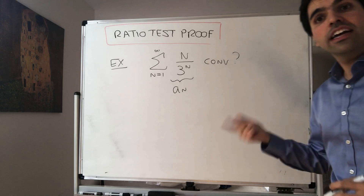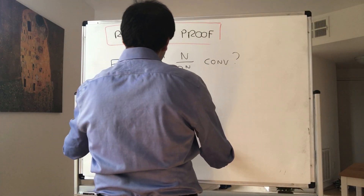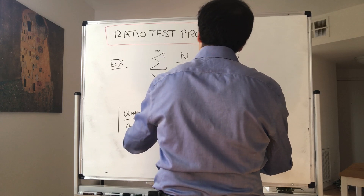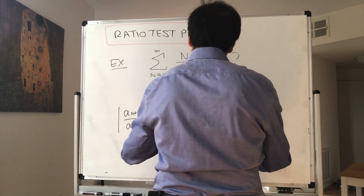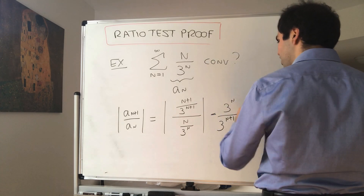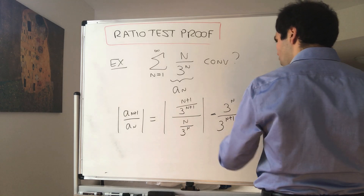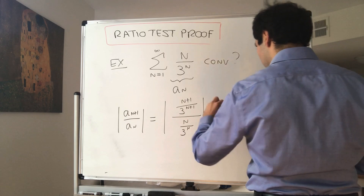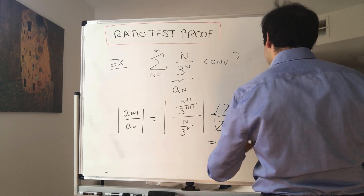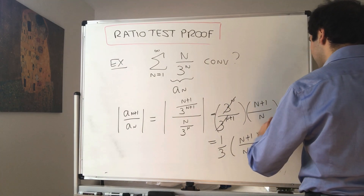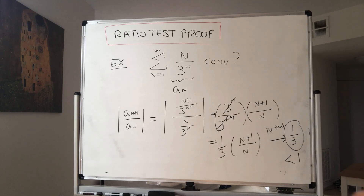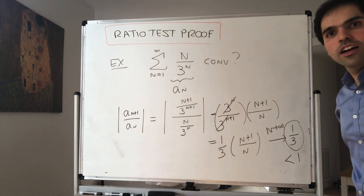The ratio test says to look at ratios of successive terms. So let's look at a_{n+1} over a_n, which becomes (n+1) over 3^{n+1}, divided by n over 3^n. Since everything is positive, this becomes 3^n over 3^{n+1} times (n+1) over n. The 3^n cancels and you're left with 1/3 times (n+1)/n. Taking the limit as n goes to infinity gives 1/3. Because this number is less than 1, we can conclude that the series converges absolutely.